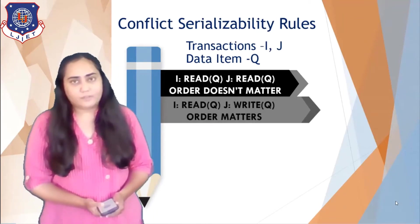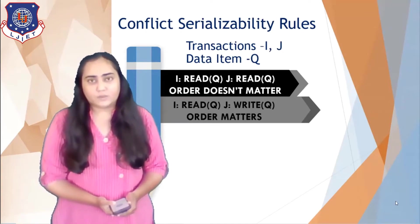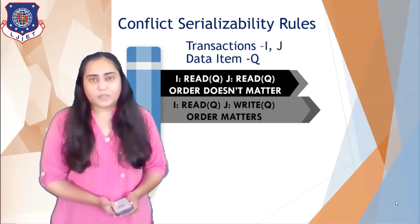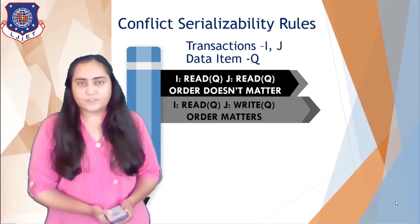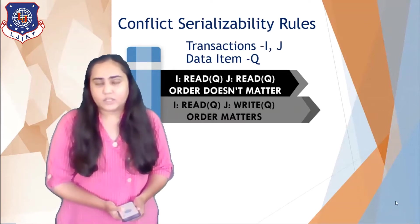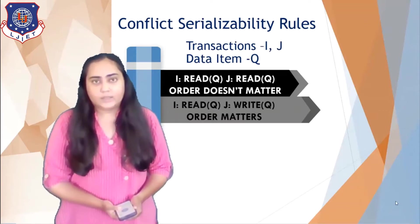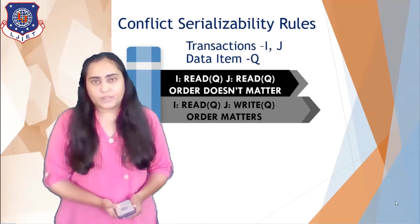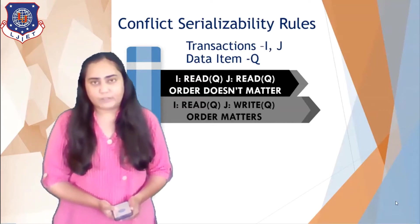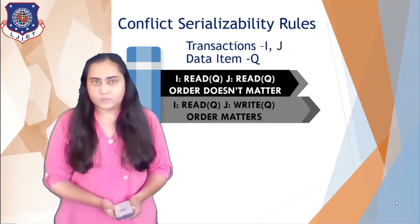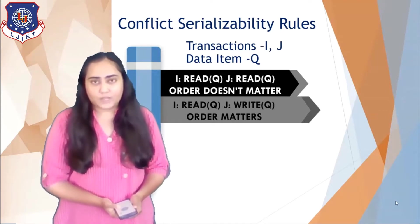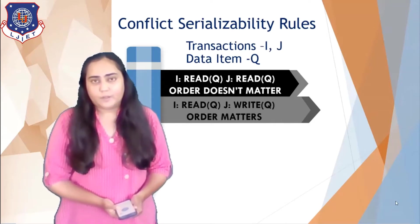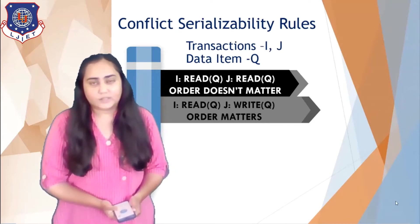The second rule is if i is trying to read q and j is trying to write q, then the order matters. If transaction i reads q first and then j writes q, then i will not get the value written by j. But if i reads after j finishes writing, then i will get the new updated value of q. So the order of these read and write operations does matter.